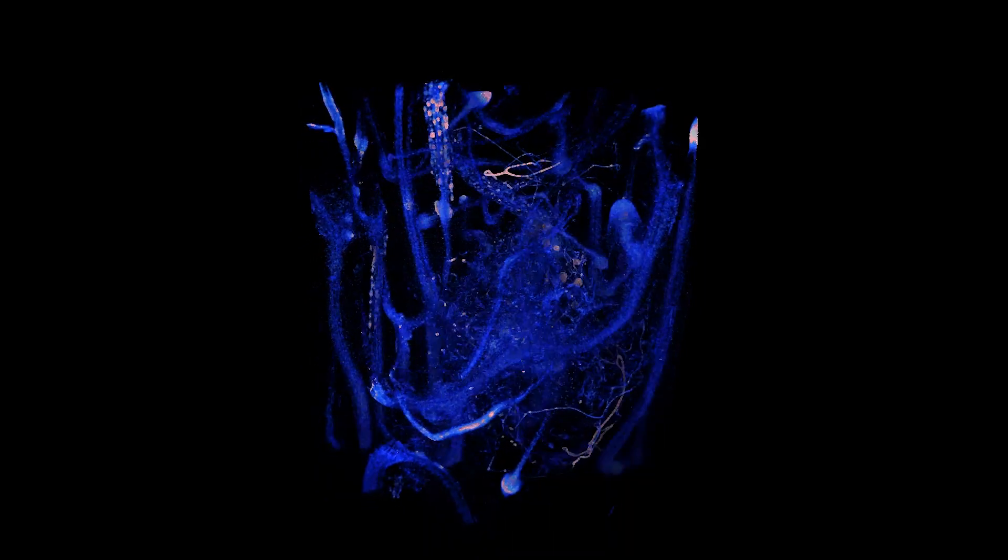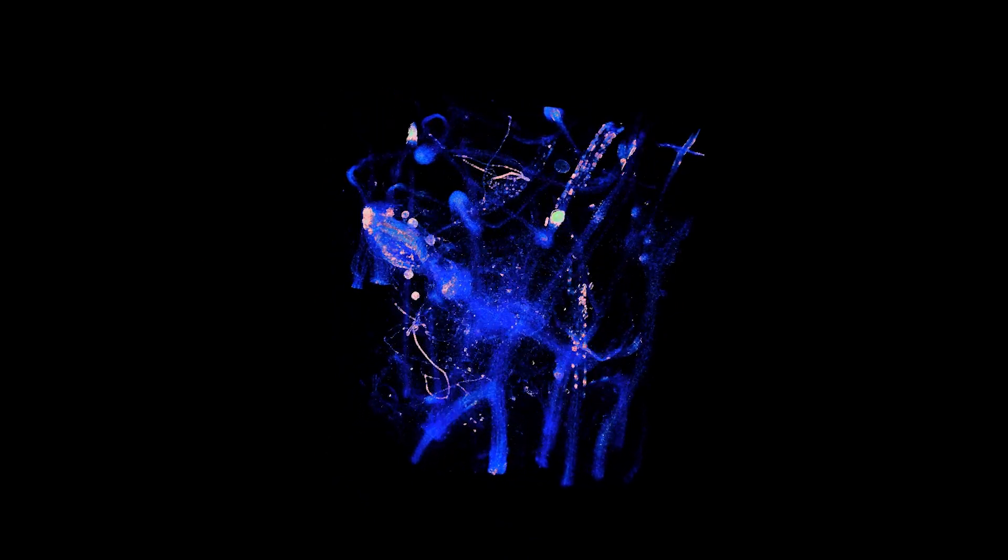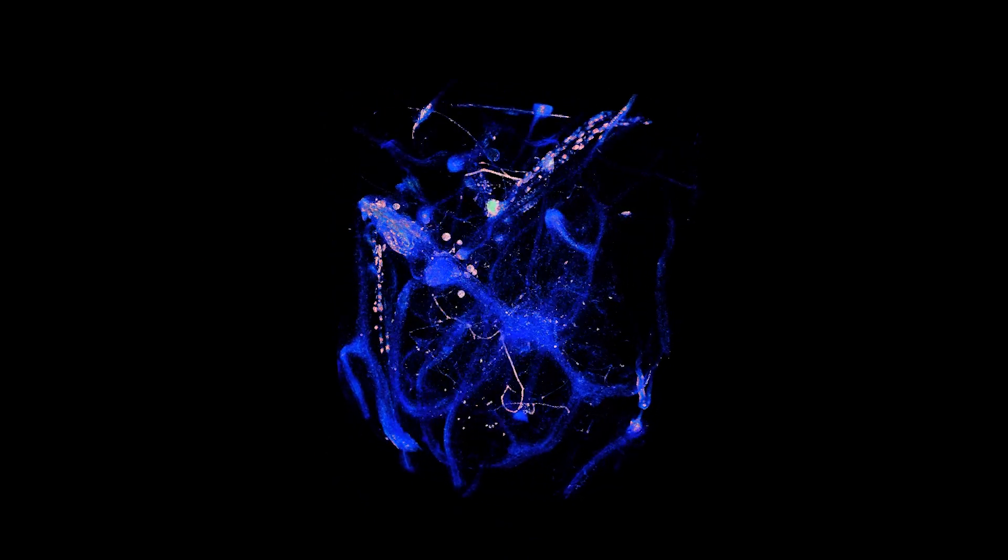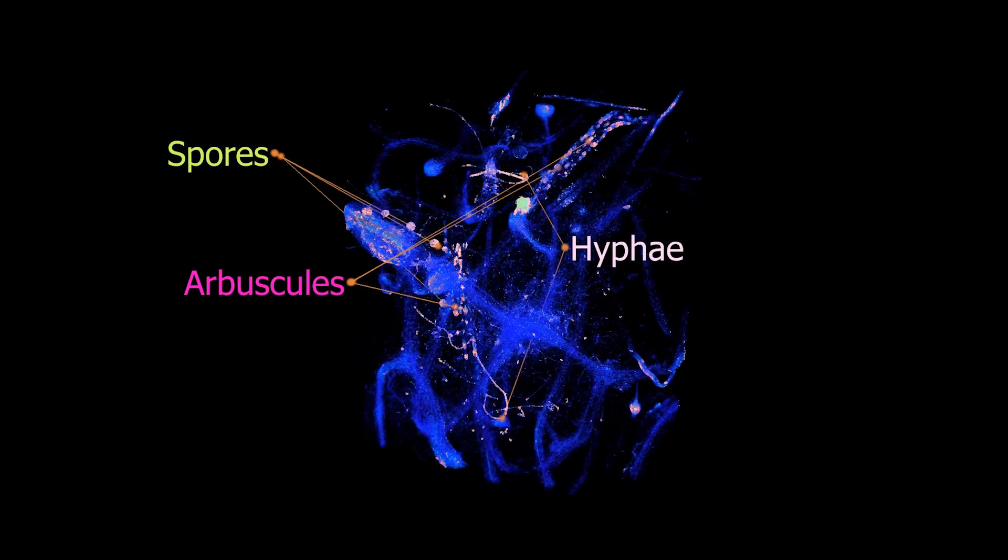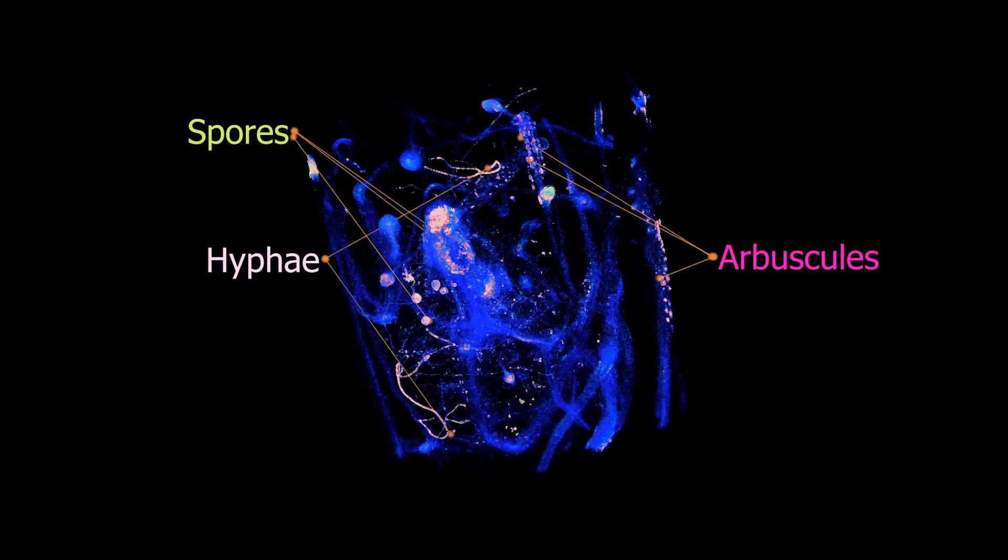By utilizing x-rays to scan a plant on a turntable, thousands of images are created. These scans are then compiled through a process called data segmentation to create a single three-dimensional representation of the collective scans, all without uprooting the plant.